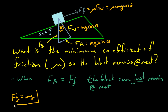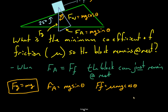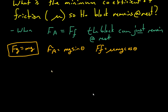So let's write this out. F.A. is equal to MG sine theta, and the force of friction is equal to mu MG times cos theta. We want to say these two values are equal to each other, so MG sine theta equals mu MG cos theta. This is the condition where the net force on the object is zero.